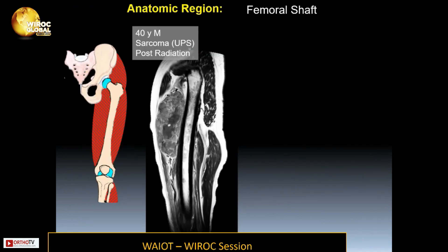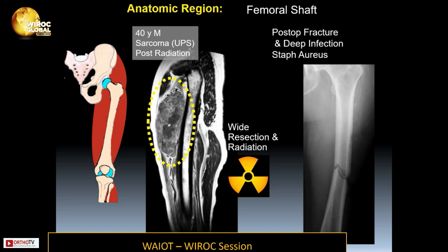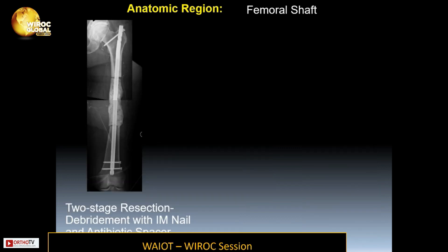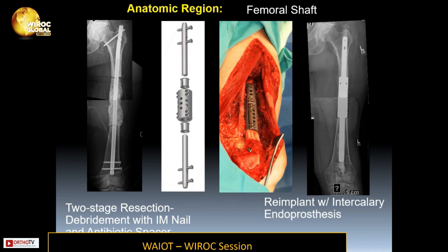A femoral shaft lesion in a four-year-old patient with undifferentiated pleomorphic sarcoma post-radiation presented with a fracture and a deep infection with Staph aureus. This was treated with a two-stage resection and debridement with an IM nail and antibiotic spacer, followed by re-implantation with an intercalary endoprosthetic.